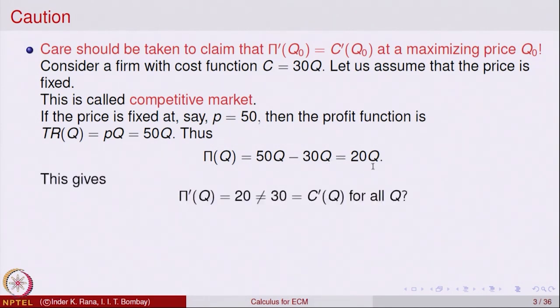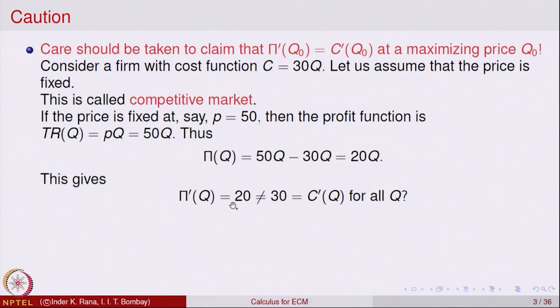Looking at the derivative, the marginal of profit is equal to 20. The marginal of revenue is 20, whereas the cost function C equals 30Q, so the marginal of cost is 30. Since 20 is obviously not equal to 30, at no value of Q will the marginal of profit equal the marginal of cost. The reason is that there is no value of Q for which there is a maximum.